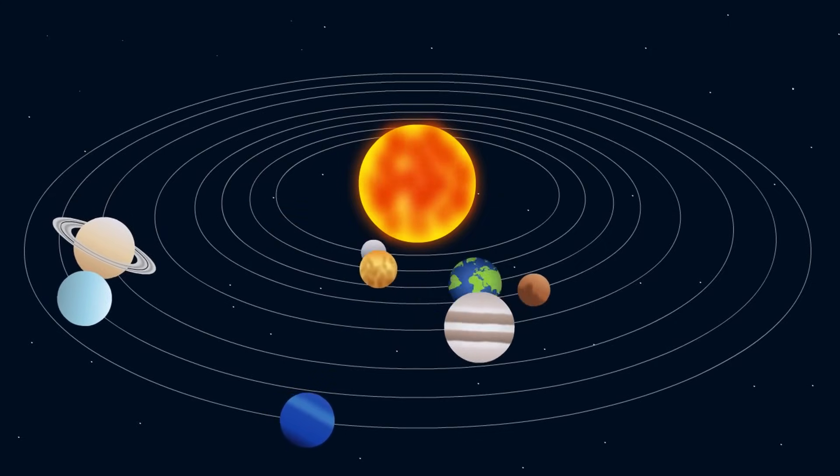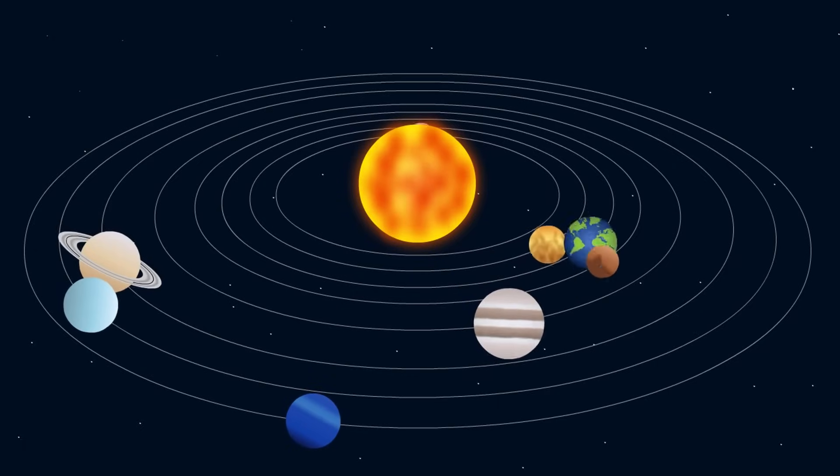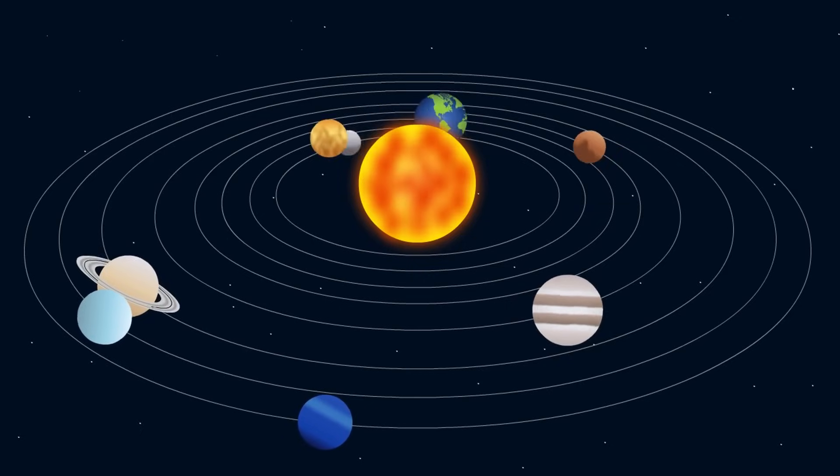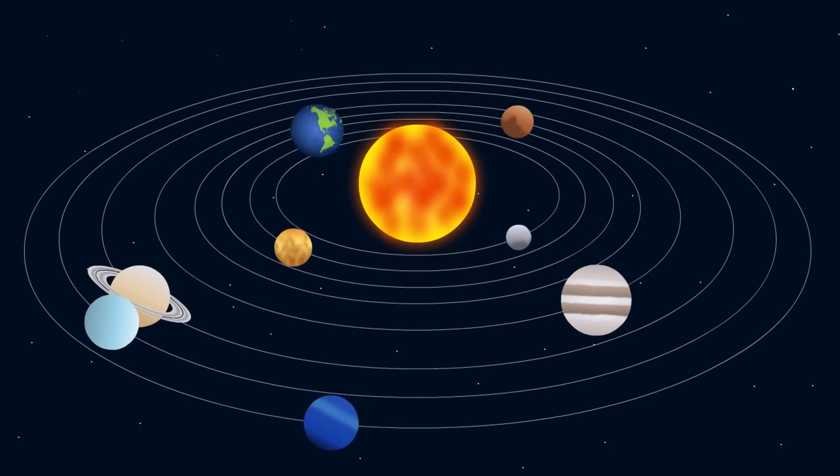Mars, 228 million kilometers away. Average -63 degrees Celsius, 210 Kelvin. Ranging from 20 degrees in the day to -140 degrees Celsius at night.